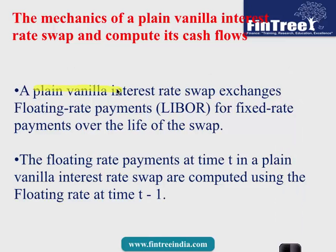Plain vanilla interest rate swap exchanges floating rate payment for fixed rate payment over the life of the swap. Floating rate payment at time t in a plain vanilla interest rate swap are computed using floating rate at time t minus 1. That means if you are making settlement at time t, then the rate that we use is of time t minus 1. We always use one period earlier rate.